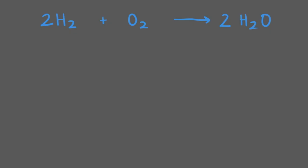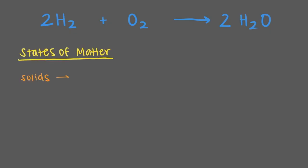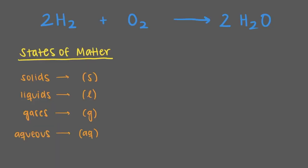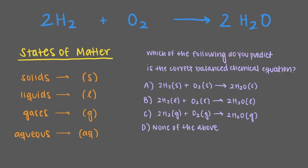Chemical equations also include the physical states of the species in a reaction. Solids are represented by an S, liquids by an L, gases by a G, and aqueous species by a Q. As we mentioned earlier in this video, these small molecules will all be gases, so we write G in parentheses next to all three species.